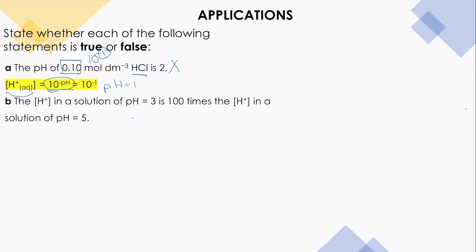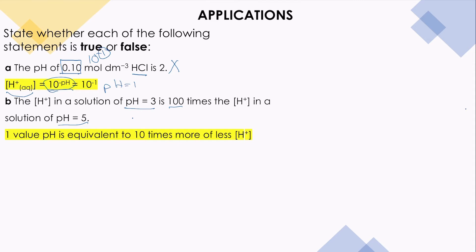The next statement: the concentration of hydrogen ions in a solution of pH 3 is 100 times the concentration of hydrogen ions in a solution of pH 5. There are two pH values difference — pH 3 and pH 5. One unit of pH is equivalent to 10 times more or less concentration of hydrogen. Moving from 3 to 5 is two units, so the concentration of hydrogen at pH 3 is 100 times that at pH 5. This statement is correct.